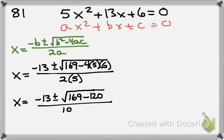So that would be X equals negative 13, plus and minus the square root of 49. Oh, look at that. That worked out nice. All over 10.